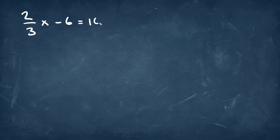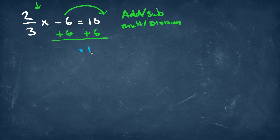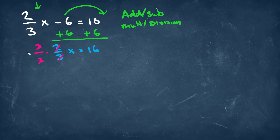For the next problem, we're going to have 2 over 3x minus 6 is equal to 10. Again, we always follow the same steps — addition and subtraction first, then multiplication and division second. We only have one variable of x on the left side, so we're going to move the 6 over to the other side. Since we have minus 6, we're going to add 6 — we always do the opposite — on both sides. We're going to be left with 16 on the right side and 2 over 3x on the left. Since we have a fraction here, we can multiply by the reciprocal — flipping it to 3 on top and 2 on the bottom — and the 3s and 2s will cancel out, leaving us with 1 here.